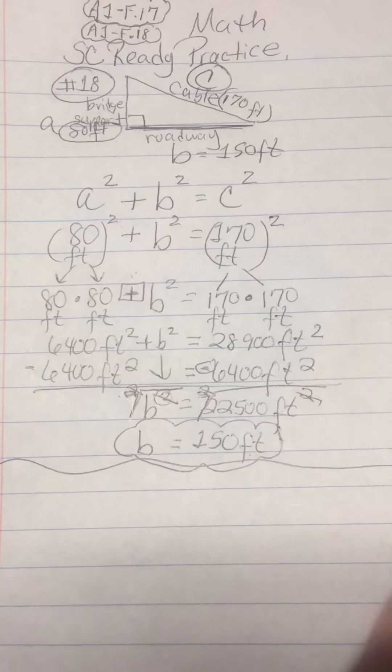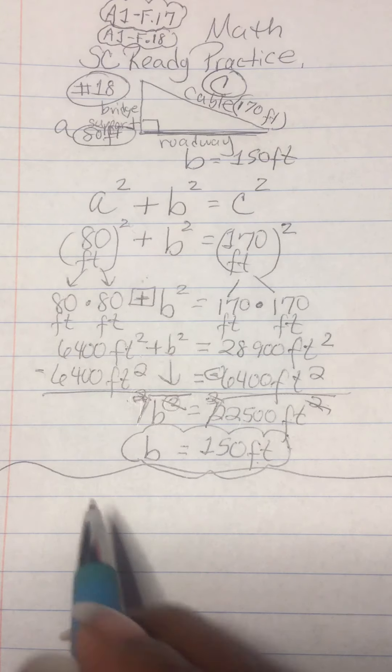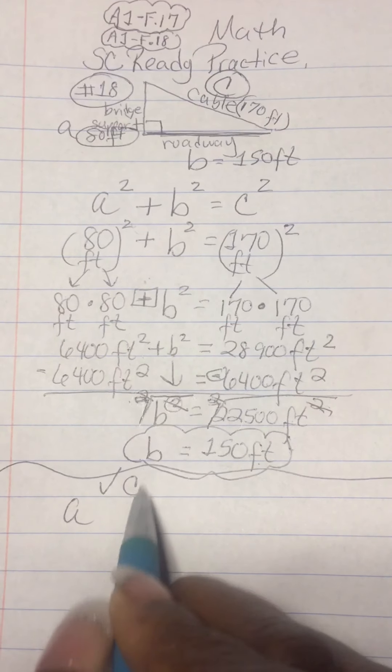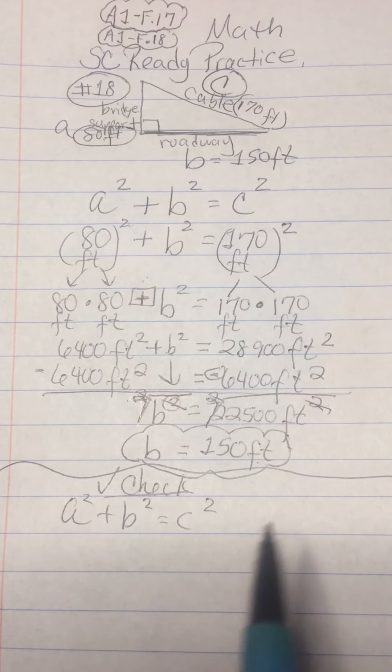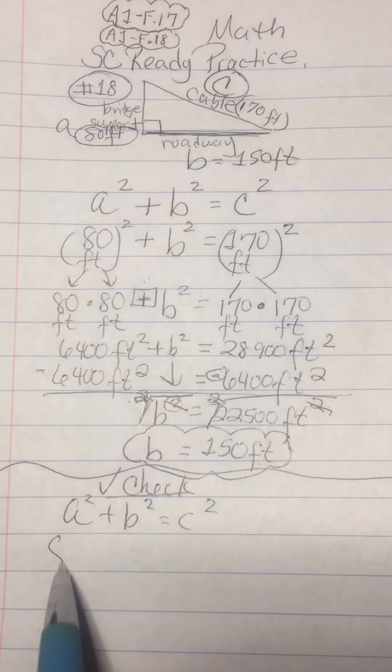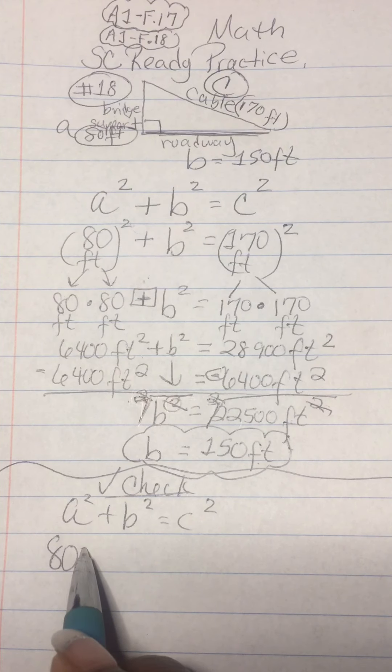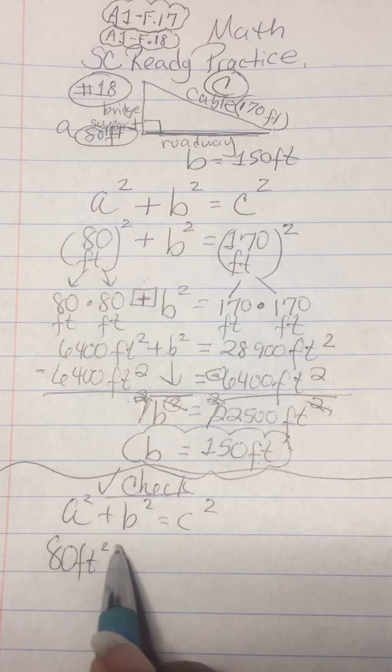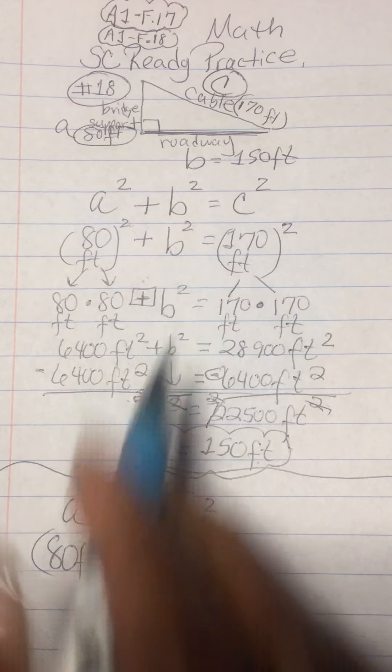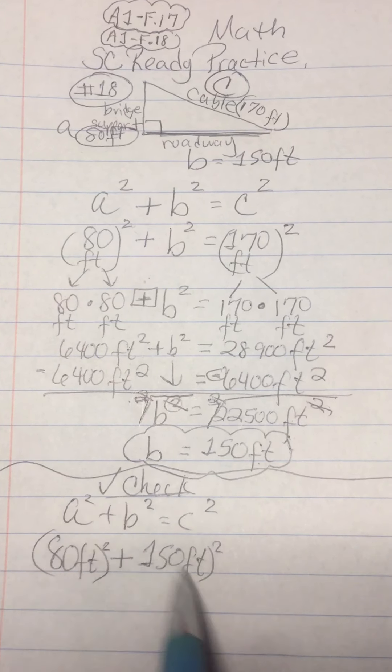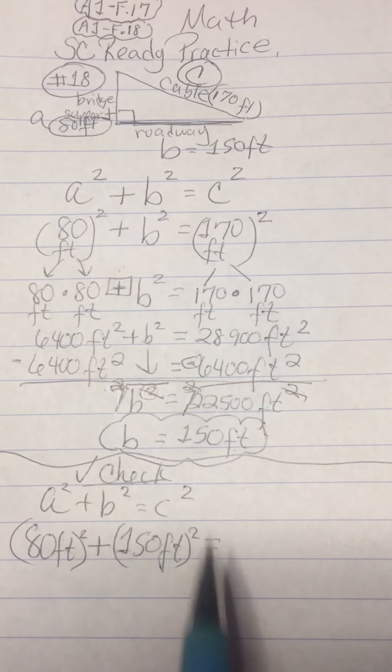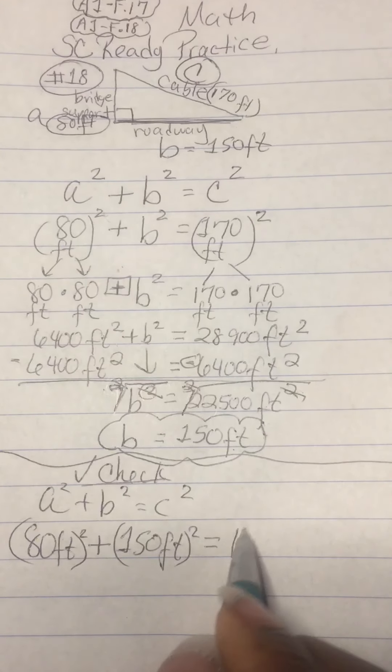In order to check this, to make sure that your triangle is right, remember, I'll put check. It's A squared plus B squared equals C squared. We said A was 80, so 80 feet squared plus B, now we know it's 150, plus 150 feet squared should equal 170 feet squared.